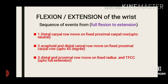Next, we will discuss flexion and extension of the wrist. Flexion and extension occur around the coronal axis. When discussing the sequence of events from full flexion to extension, there are mainly three sequences: first, the distal carpal row moves on a fixed proximal carpal row; second, the scaphoid and distal carpal row move on a fixed proximal carpal row; and third, the distal and proximal carpal rows move on the fixed radius and triangular fibrocartilage complex.